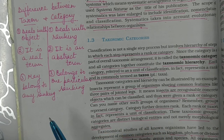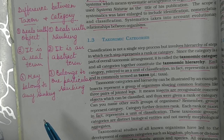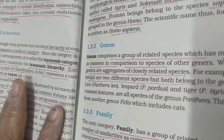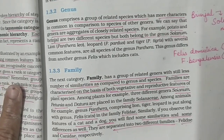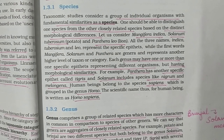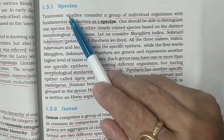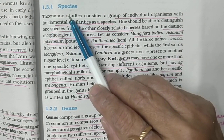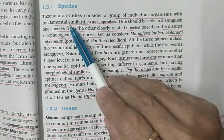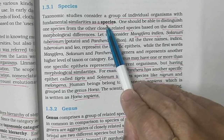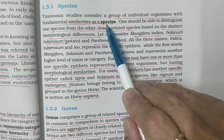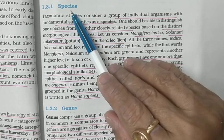Let us now discuss each category. We start with the smallest category — the lowest category — that is species. Species is a group of individual organisms with fundamental similarities. A group of individual organisms with fundamental similarities is known as species.